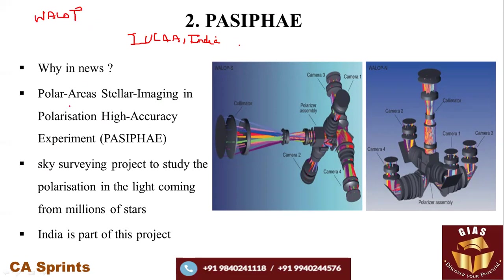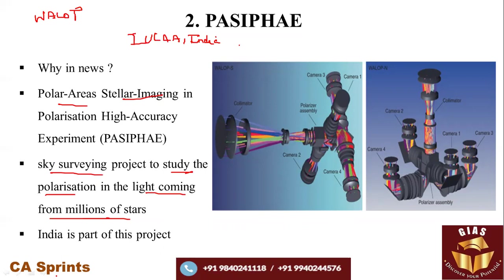PASIPHAE stands for Polar Area Stellar Imaging in Polarization High Accuracy Experiment. It is an international collaborative sky-surveying project to study the polarization in light coming from millions of stars. This is a completely India-led project. The Infosys Foundation of India, the Stavros Niarchos Foundation of Greece, and the National Science Foundation of the USA have granted $1 million for this project.